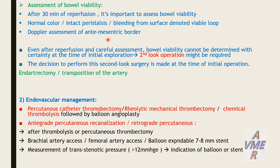Assessment of bowel viability after revascularization is critical. It depends on clinical assessment — normal color and peristaltic bleeding from the surface, assessed using a Doppler probe at the antimesenteric border. Even after revascularization and careful assessment, bowel viability determination can be difficult at the time of the initial operation, and a second-look operation may be required. The decision to perform second-look surgery is made at the time of the initial operation.